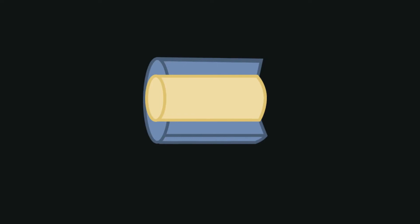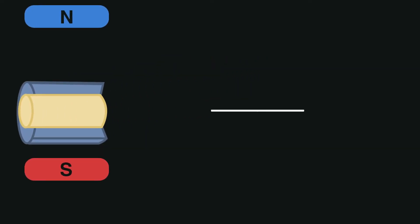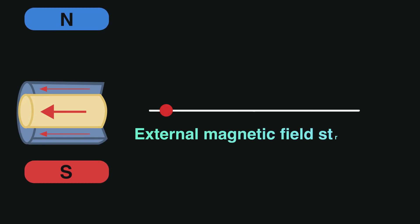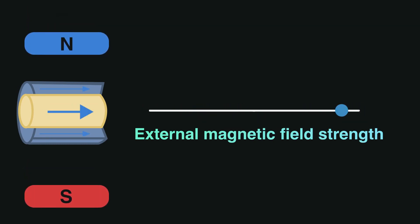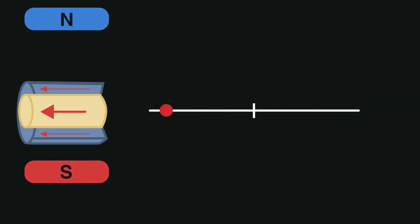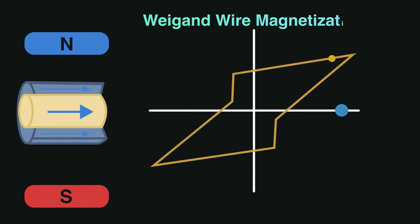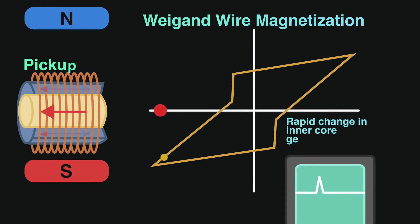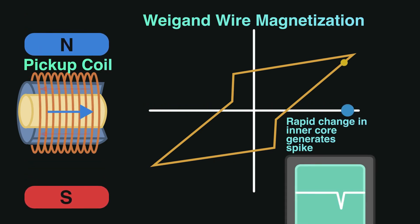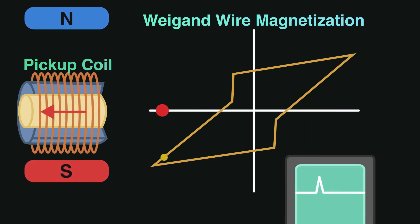The outer shell has a high resistance to being magnetized. If a magnet is brought near the wire, the outer shell shields the inner soft core from the magnetic field until the magnetic field becomes high enough. At which point, the entire wire, both the outer shell and the inner core, will rapidly switch magnetization polarity.